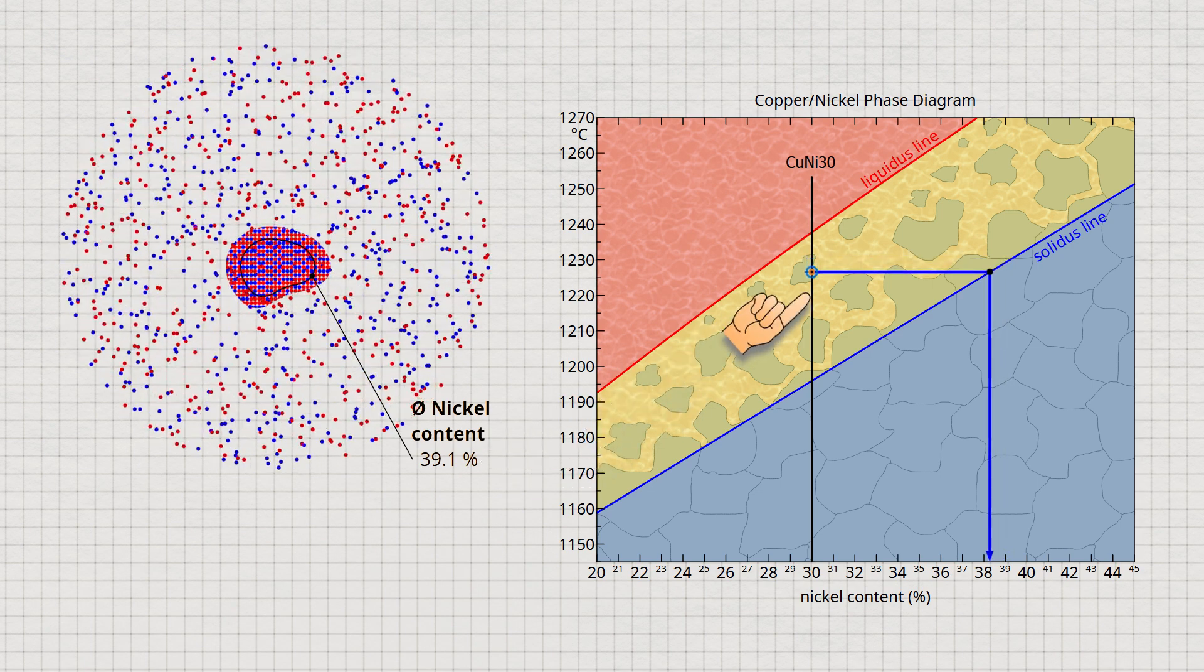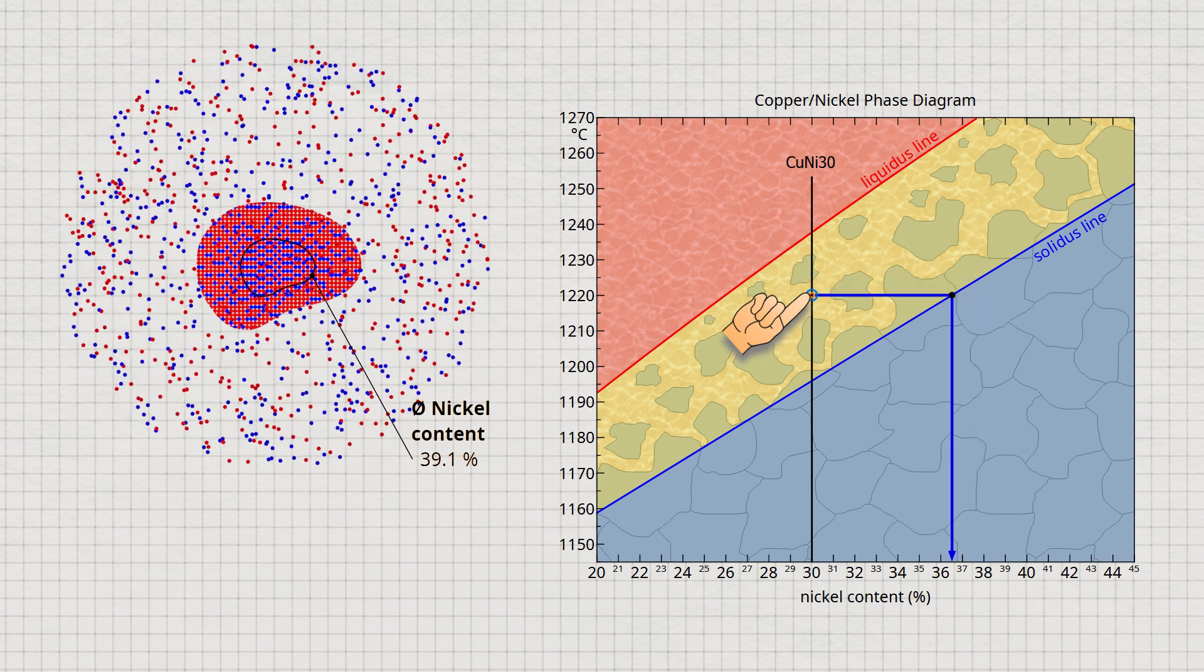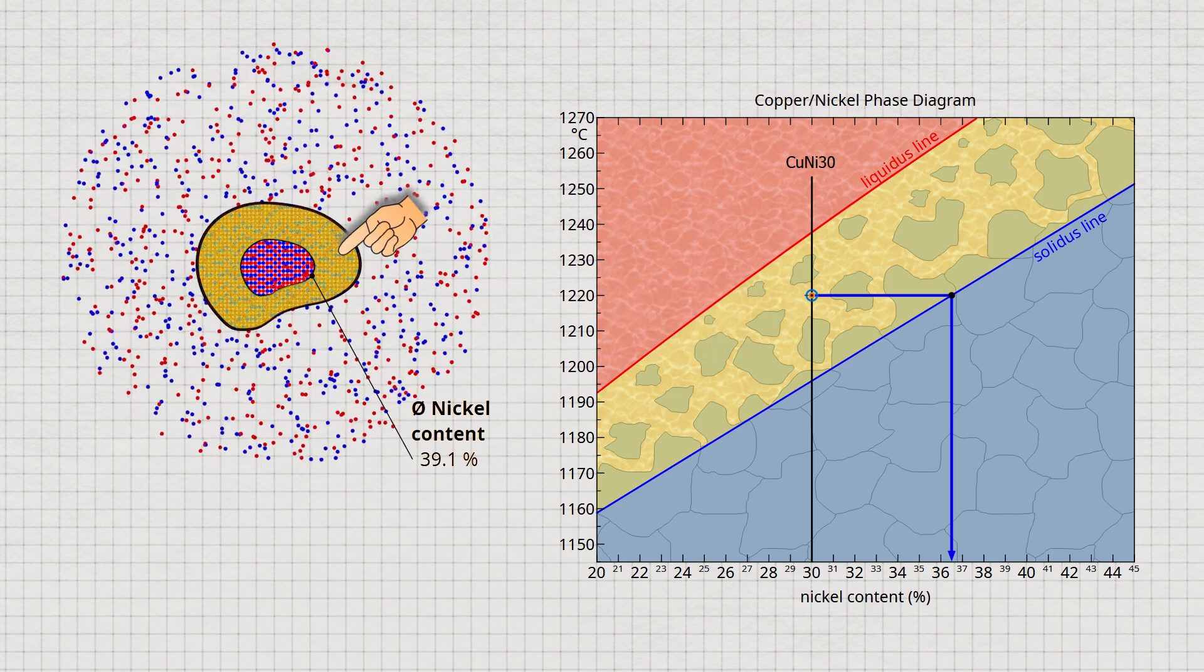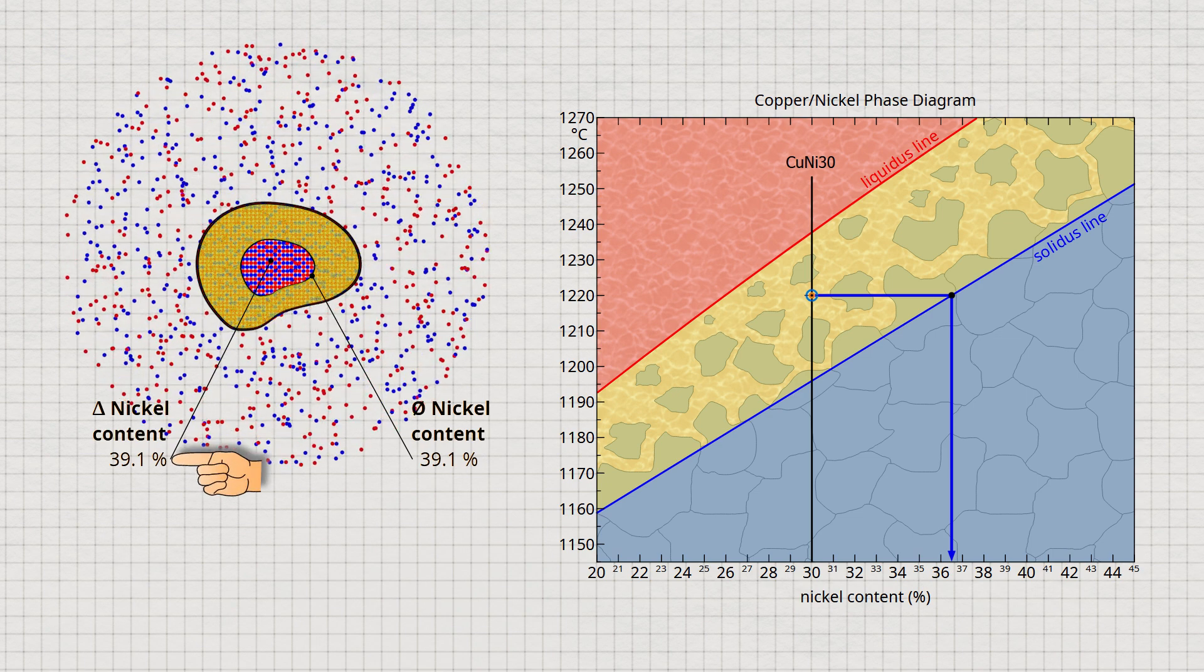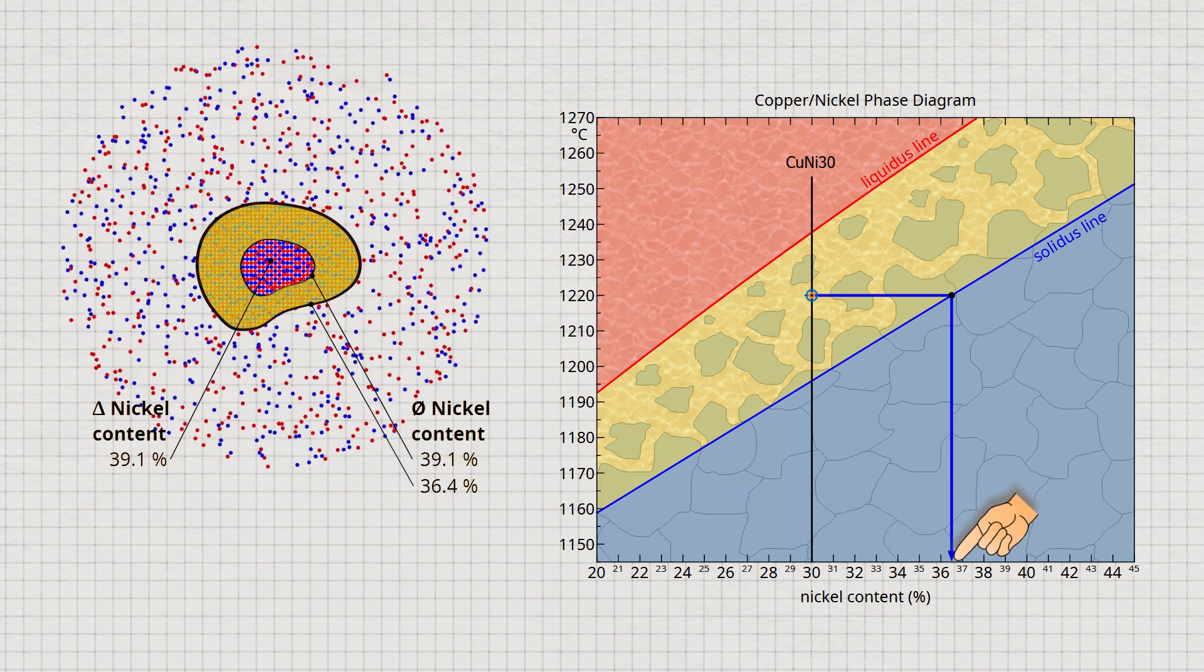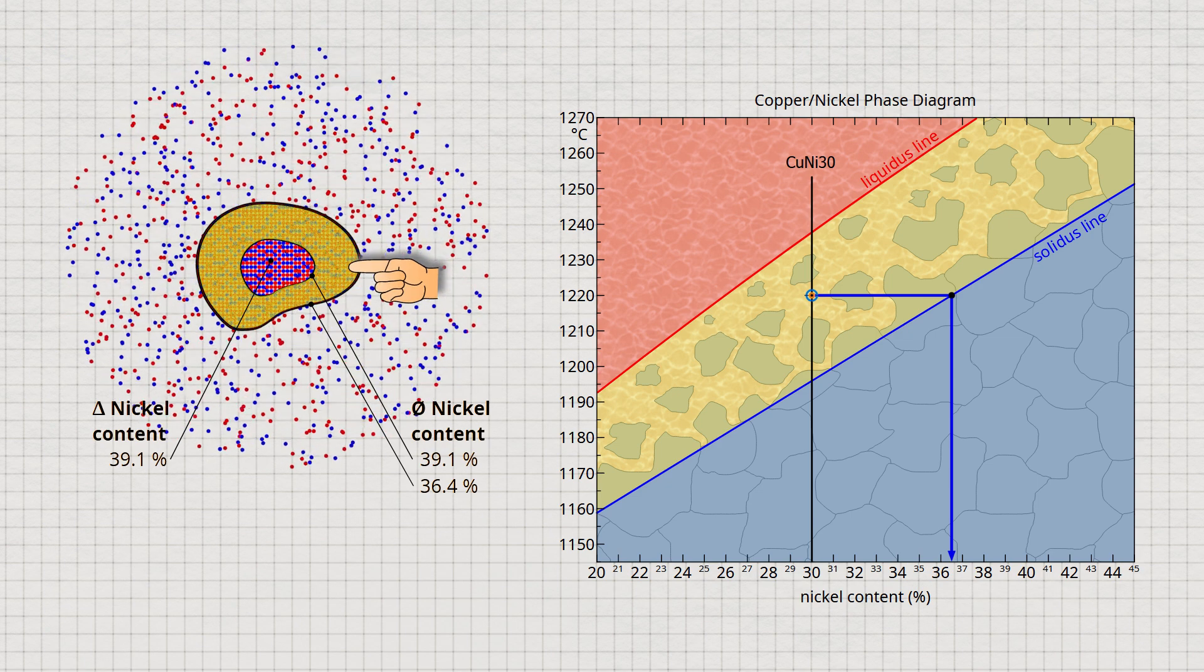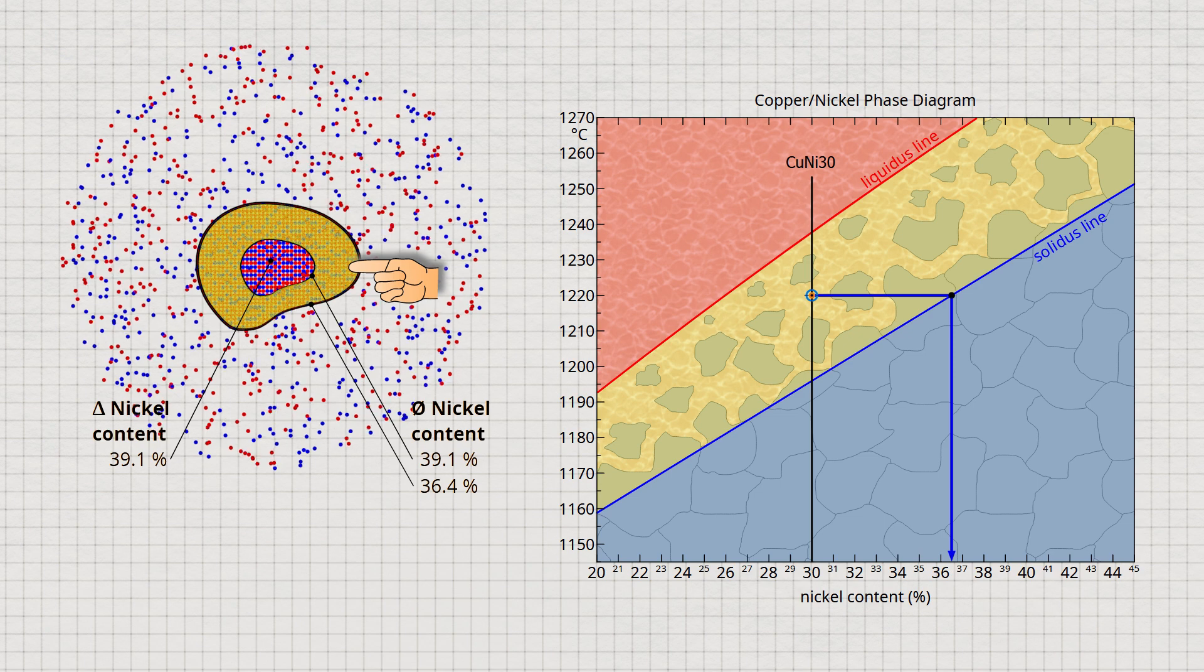Let us now consider further solidification up to a temperature of 1,220 degrees Celsius. In this temperature range, the layer marked in yellow has solidified. Whereas the grain previously contained an average of 39.1% nickel, the average nickel content of the entire grain is now only 36.4%. Therefore, the newly solidified layer must have a lower nickel concentration than the previously formed layer, resulting in a lower average value.